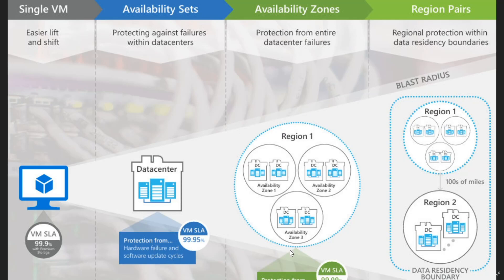Zooming in on that, here's our region and this one has three availability zones. Availability zones themselves are not necessarily limited to two data centers per zone — there could be several more, depending on the size of that region. Inside that region's availability zones we have the data centers themselves. Within those data centers, they all have their own independent power, cooling, generators, backup, and equipment like hosts and storage.